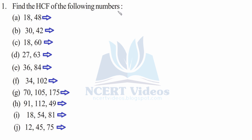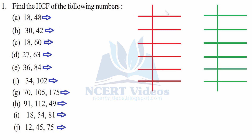First, find the HCF of the following numbers from a to j. The first one is 18 and 48. We will write 18 and 48. First we will do the prime factorization for 18: two nines are 18, three threes are nine, three ones are three.